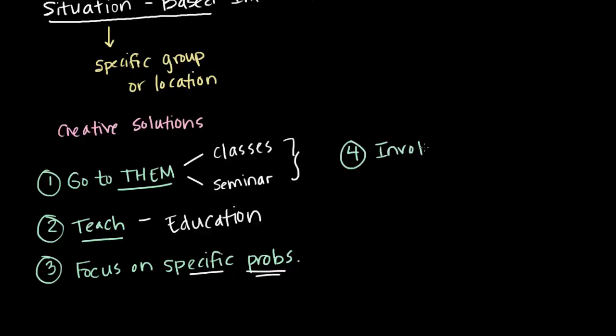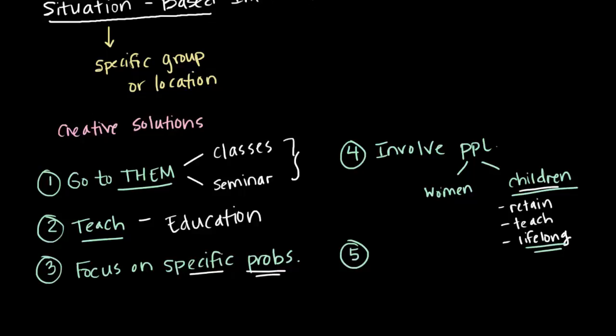Now, this one may seem pretty obvious, but you need to involve people. And when we say people, we mean specifically women and children. Now, children are an awesome resource when it comes to these interventions, because research has shown that not only do children retain what you've told them, but they teach other people and they develop lifelong habits. So if you can teach a child early on the importance of exercise and a healthy diet, this is something that they can share with their friends and that they're going to carry for the rest of their life. So you want to make sure that you're involving people.